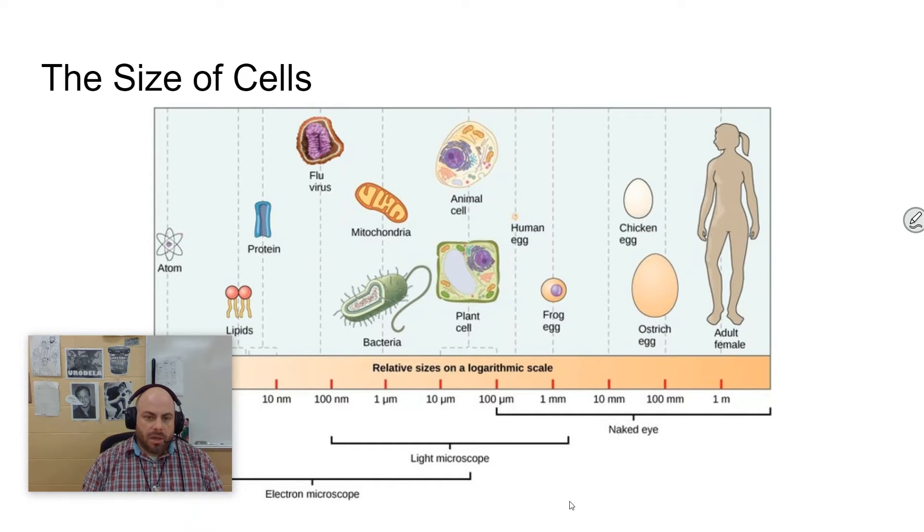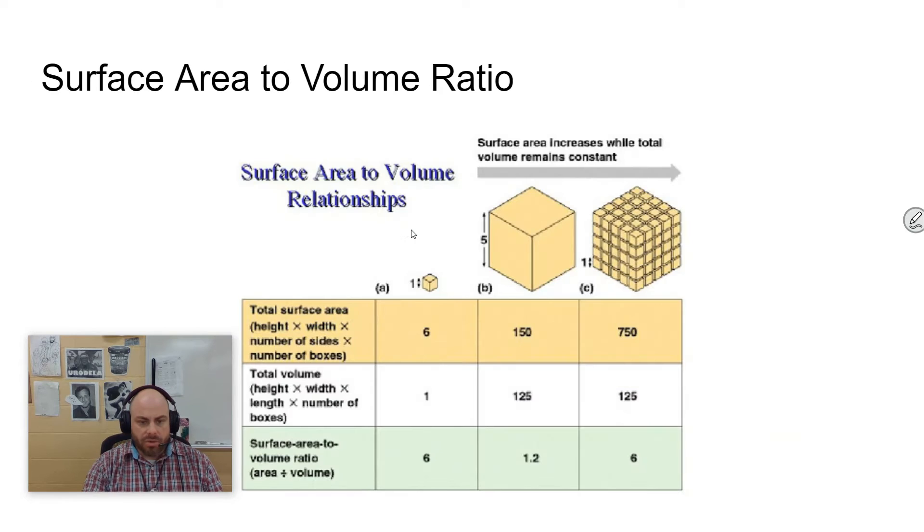And the way that we will talk about that in this class is we will say that cells need a sufficient surface area to volume ratio in order to move those materials because volume increases at a much greater rate than surface area does.